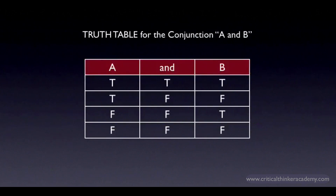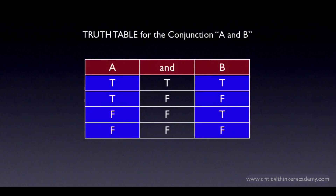It's sometimes handy to represent the logic of compound claims with a table that gives the truth value for the compound claim for every possible combination of truth values of the component claims. For conjunctions, the truth table looks like this. Under each of the conjuncts, we list all the possible truth values such that each row represents a distinct logical combination of truth values.